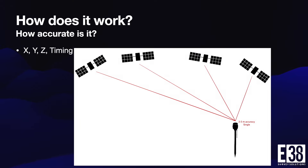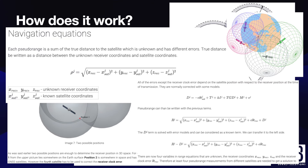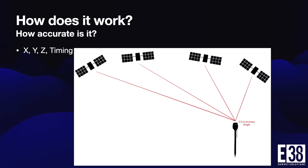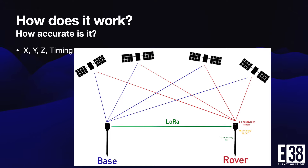So how do GNSS receivers work, and how accurate can we expect them to be? Our GNSS receiver will use multilateration to determine its position. Using this method with a single receiver solution will give it a point with a rough accuracy of two to three meters. That accuracy is good enough for what is used in something like your cell phone's navigation. We can improve that accuracy by bringing in a second receiver and using its solution to help correct the position of the first, or vice versa.